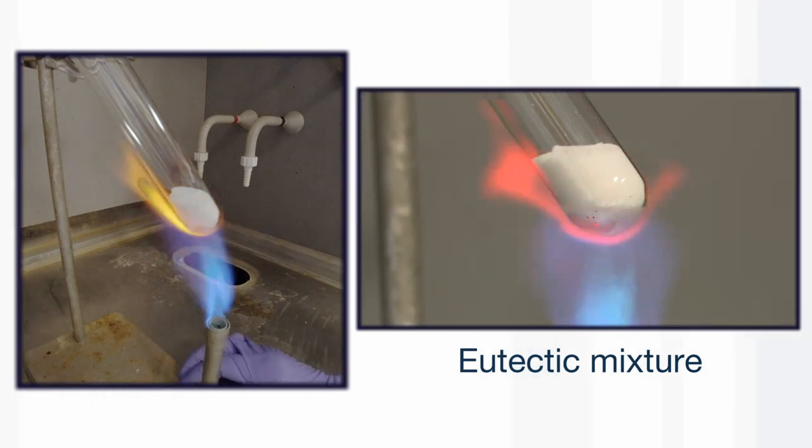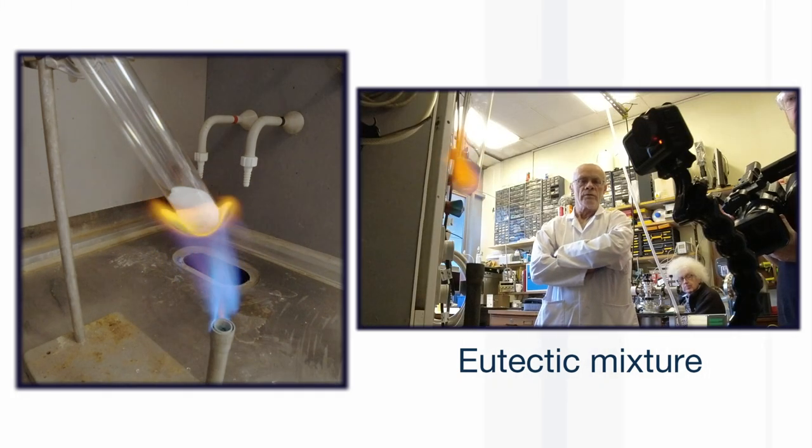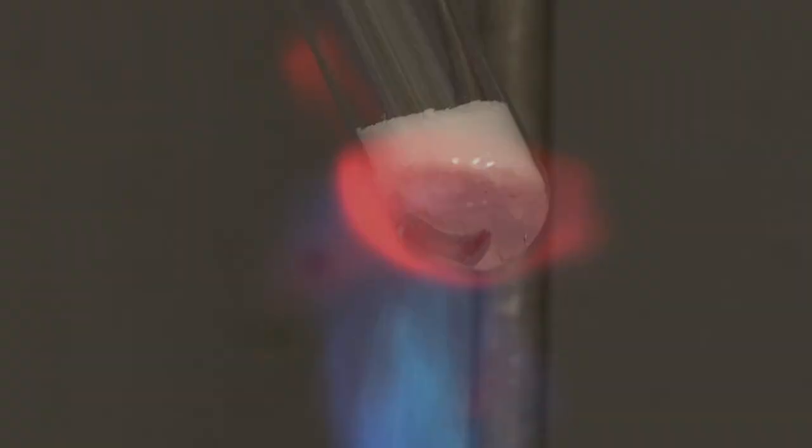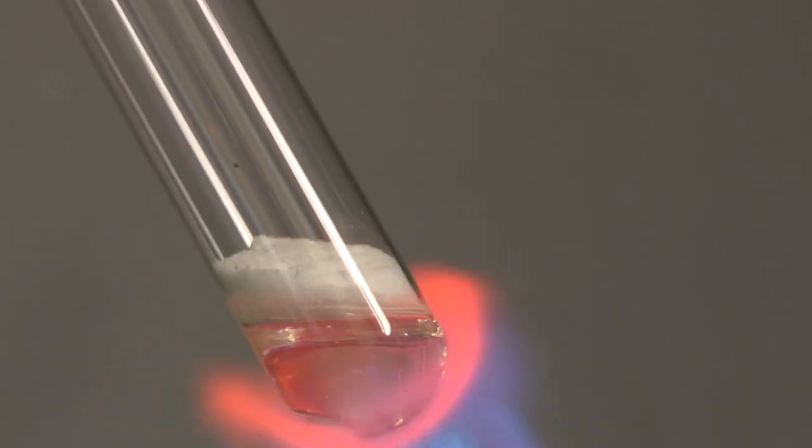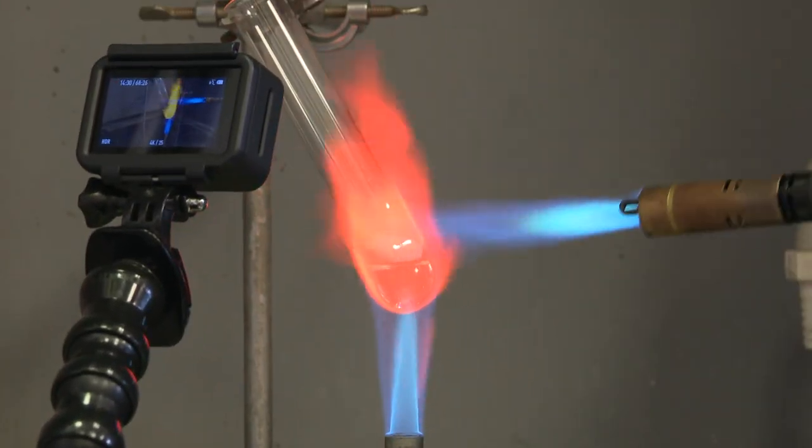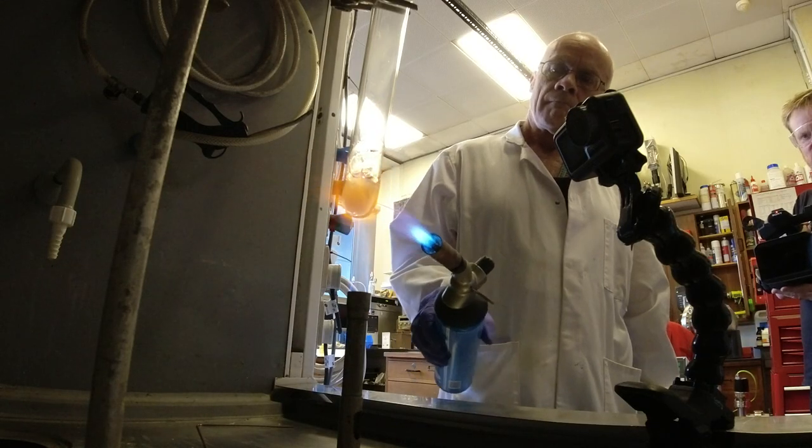So Neil mixed them together and started heating. As he started heating, the bottom part of the mixture began to melt, but the top part was still rather solid. So he used an extra gas gun and it got really hot and everything melted.